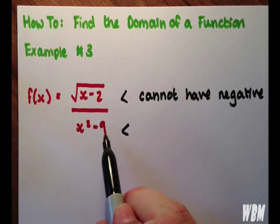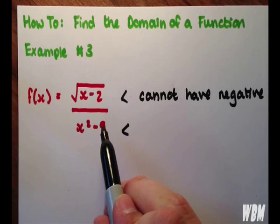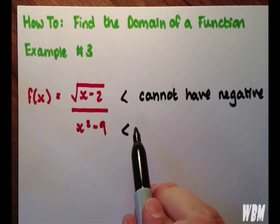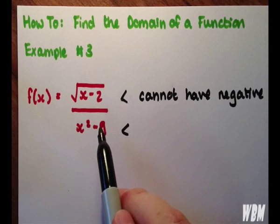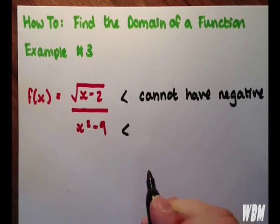And the denominator is x squared minus 9, and that cannot be equal to 0, because anything divided by 0 just doesn't work out.